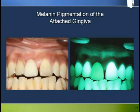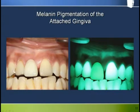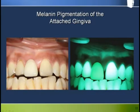Earlier we saw that the attached gingiva typically appear dark under Velscope, although they naturally appear pale pink under white light. Here's another reason they can appear dark under Velscope — in this case it's for the same reason they appear dark under white light: the absorption of light by melanin.